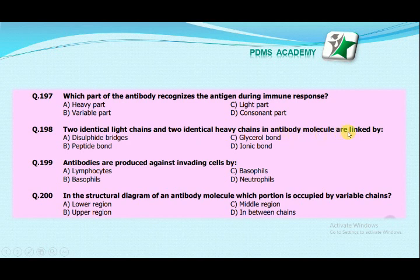The correct answer is disulfide bridges. Antibodies are produced by B lymphocytes. There are two types of lymphocytes: T and B. Antibodies are produced by B lymphocytes.